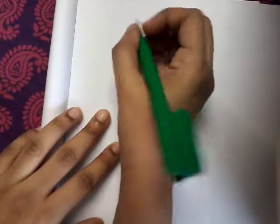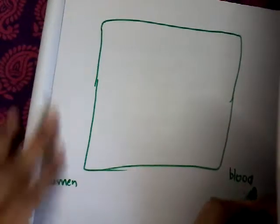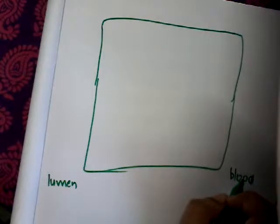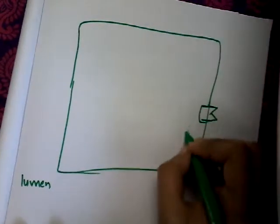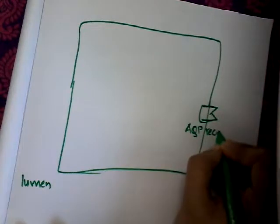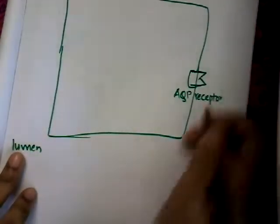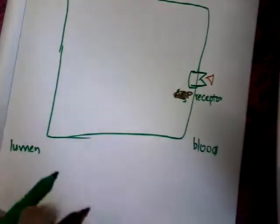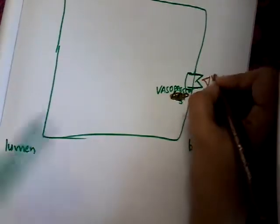Let us first learn the normal aquaporin pathway and how water is absorbed normally. If this is the lumen and this is the blood, there is a receptor called the vasopressin receptor. When vasopressin — that is type 2 vasopressin — comes and binds to this vasopressin receptor...